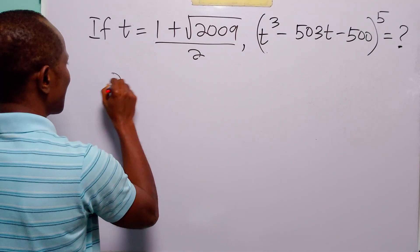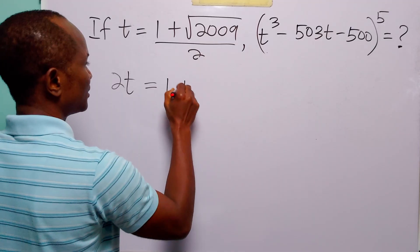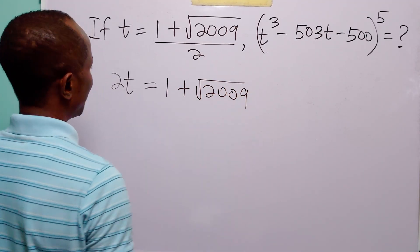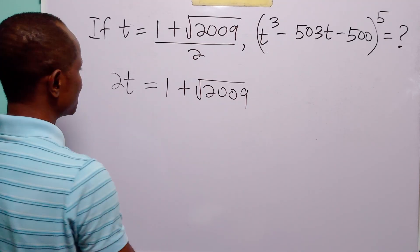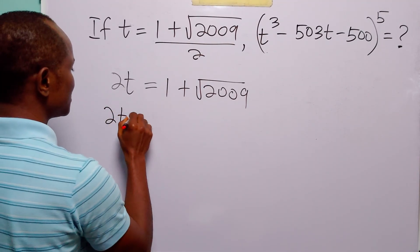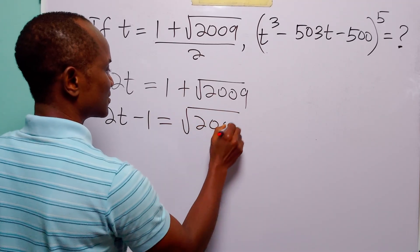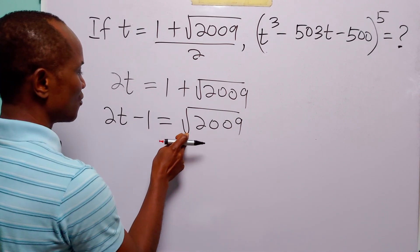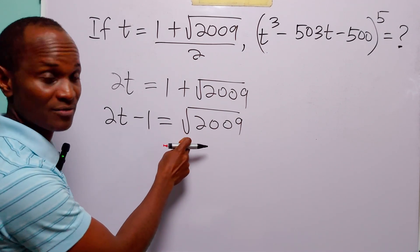When we do that, we have 2t is equal to 1 + √2009. And now let us subtract 1 from both sides of this equation. We have 2t − 1 is equal to √2009. And the next thing we will do will be to square both sides of this equation to get rid of this square root.